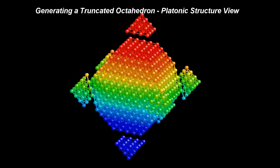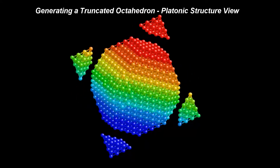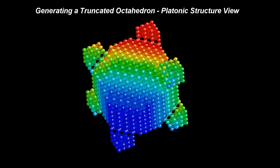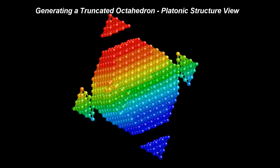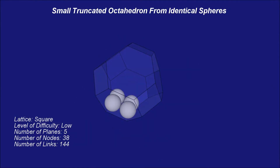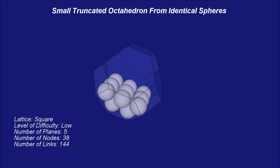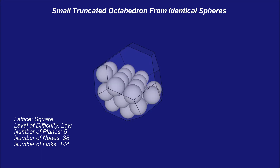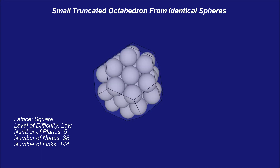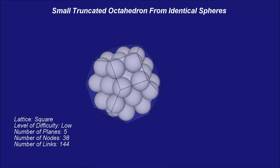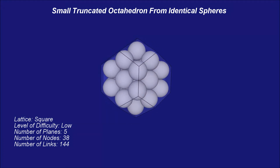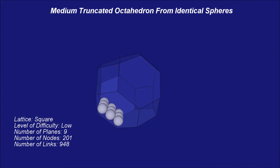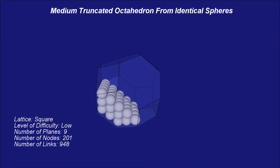This process can be applied to octahedrons formed from a fewer number of spheres. The truncated octahedron pattern can still be seen clearly in this simple structure. This process works on any octahedron with edges divisible into three equal sizes. The number of spheres determining the initial octahedron must be one of the following: 4, 7, 10, 13, and so on.